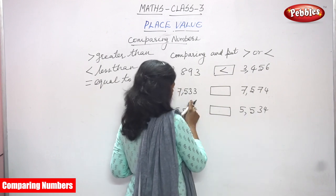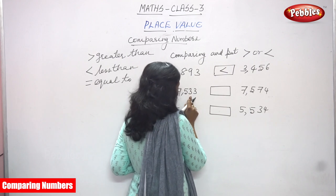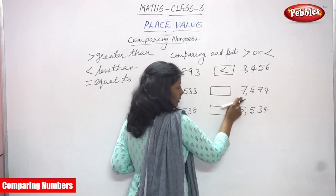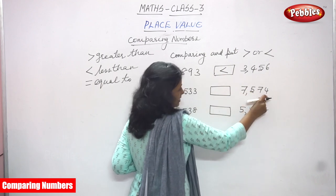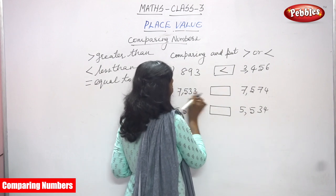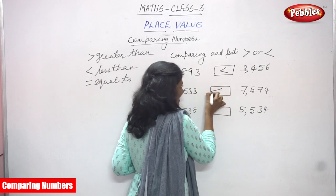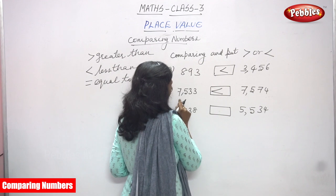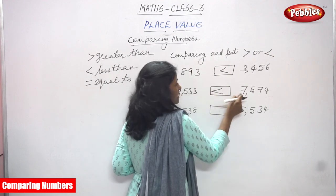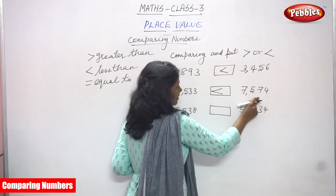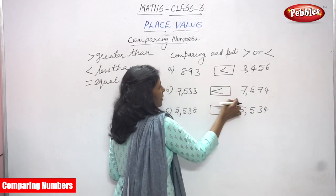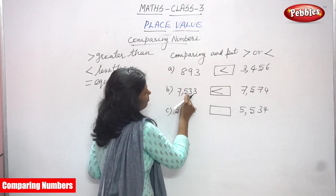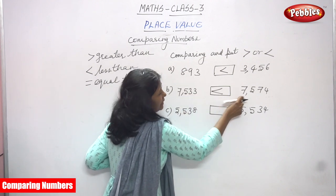So again you have to go to the tens place. In the first number there are 3 tens, and in the second number there are 7 tens. So 7574 is automatically the greater number. Comparing both numbers, 7533 is less than 7574.